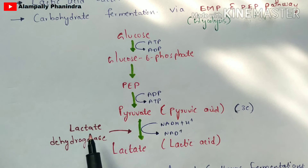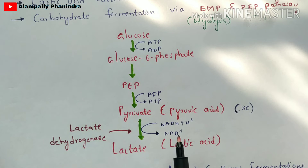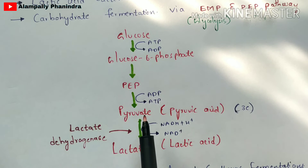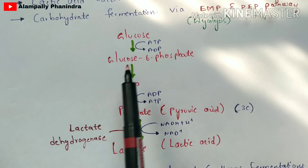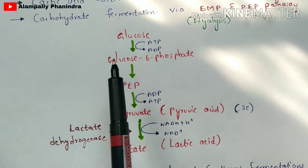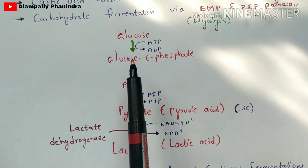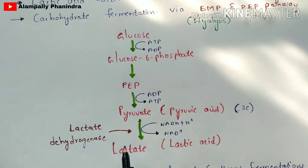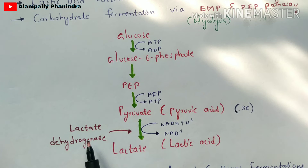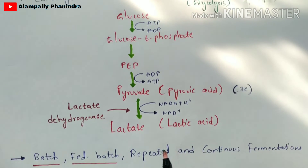From pyruvic acid, you convert it into lactic acid using the enzyme lactate dehydrogenase. This process is done through fermentation and is called carbohydrate fermentation, because glucose is a carbohydrate. The product obtained by carbohydrate fermentation of glucose using lactate dehydrogenase is lactic acid. If lactate dehydrogenase enzyme is absent, there will be no production of lactic acid.